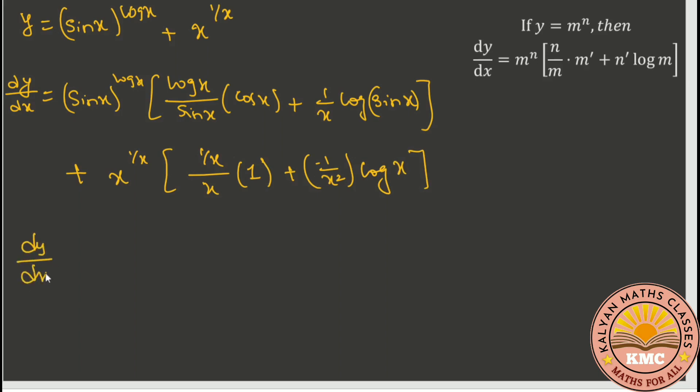So dy by dx equals sin x to the power log x times log x cot x plus log sin x over x, plus the second term x to the power 1 by x times 1 by x squared minus 1 by x squared times log x.